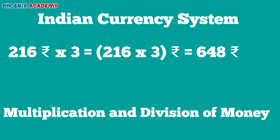Let's multiply 216 rupees by 3. We multiply 216 by 3 as numbers. We will get 648. So the answer is 648 rupees.